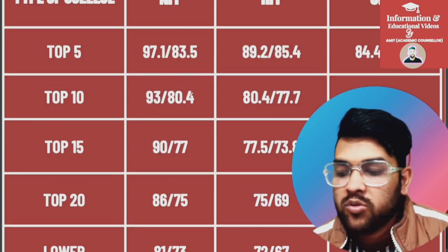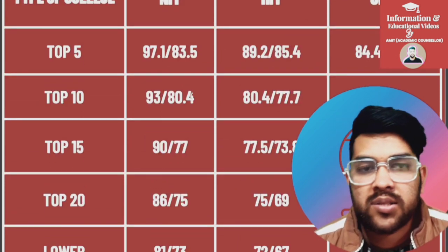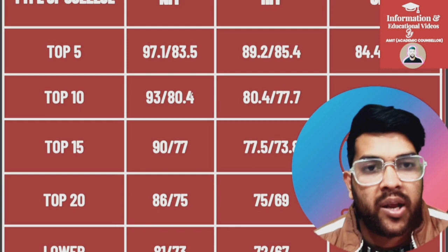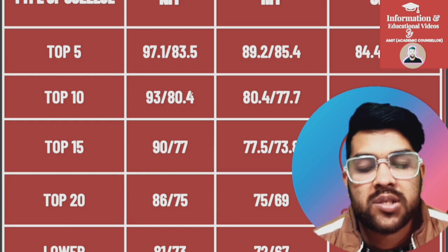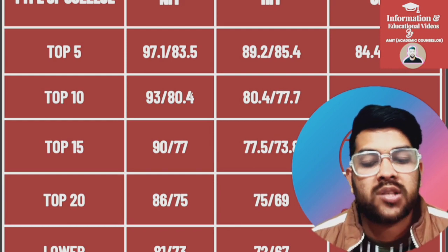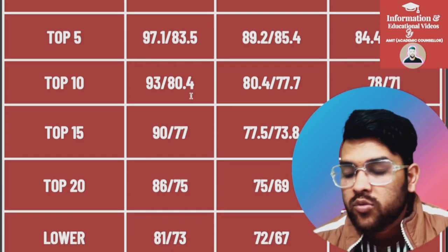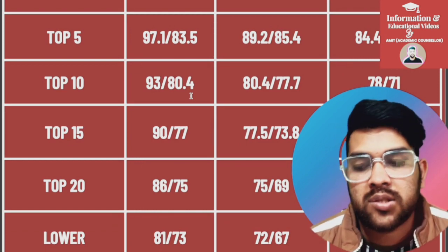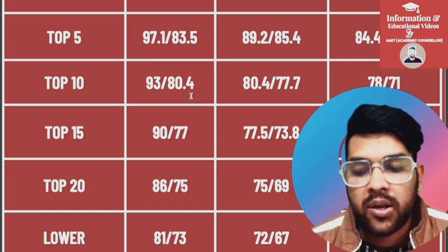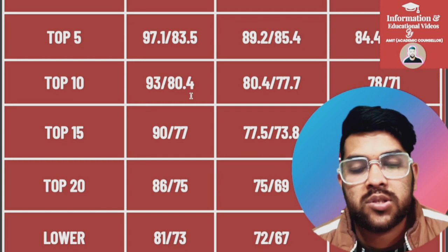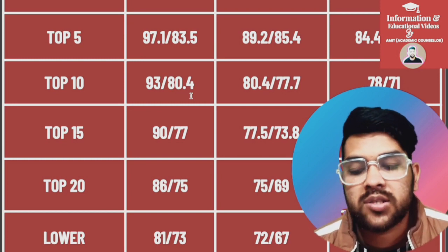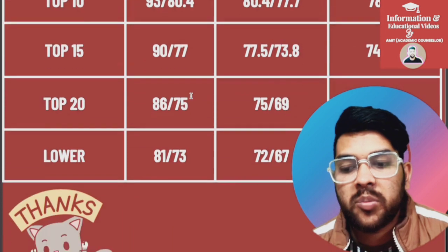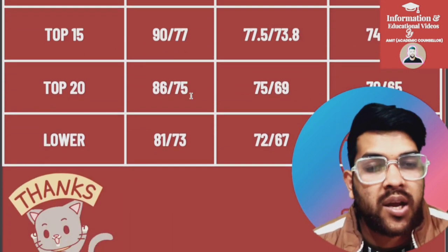For top 20: NITs require 86 and 75; IIITs require 75 and 69; GFTIs require 70 and 65 percentile. For lower-tier colleges: NITs require 81 and 73; IIITs require 72 and 67; GFTIs require 65 and 62 percentile. This was the complete information regarding SC category aspirants.